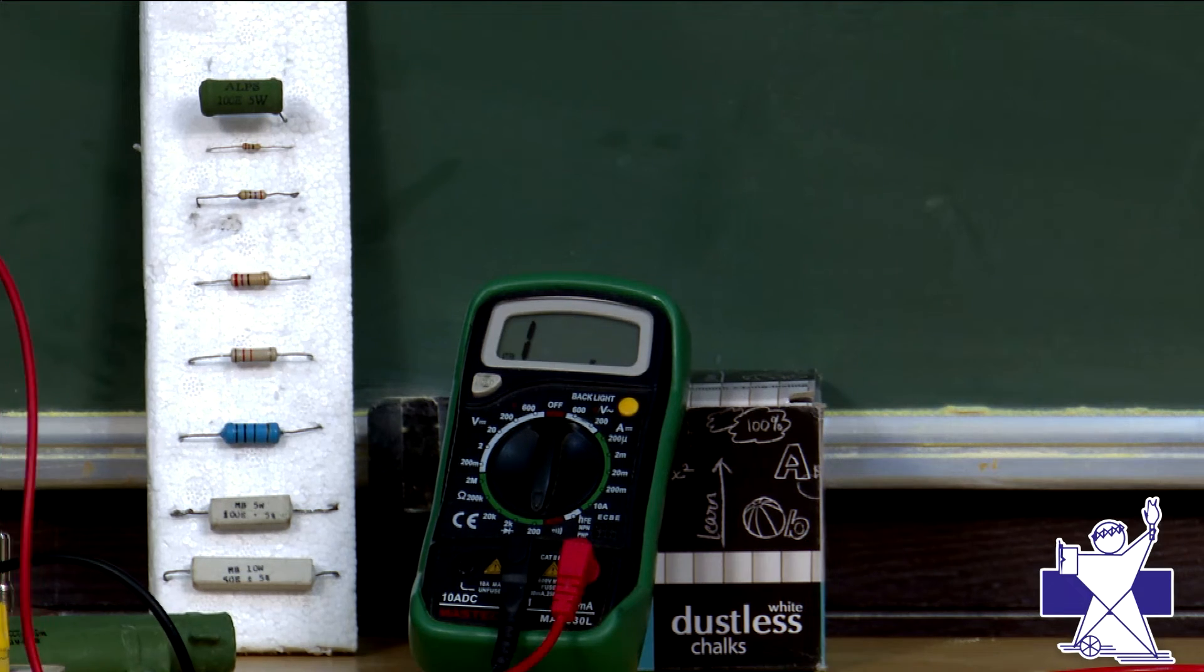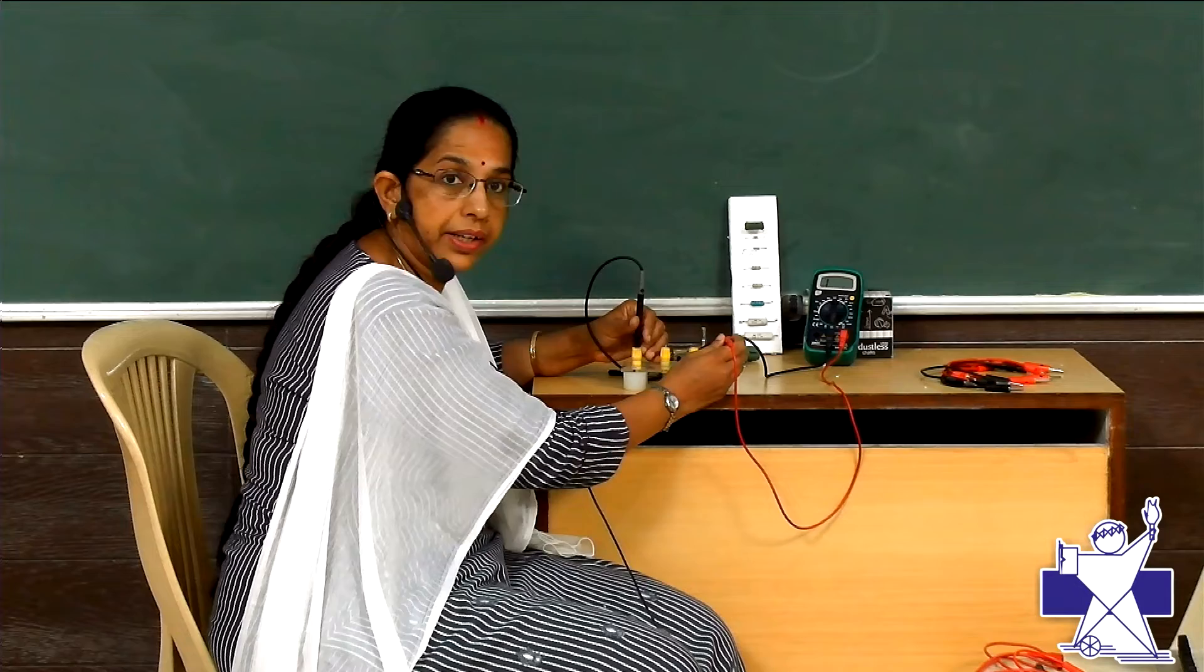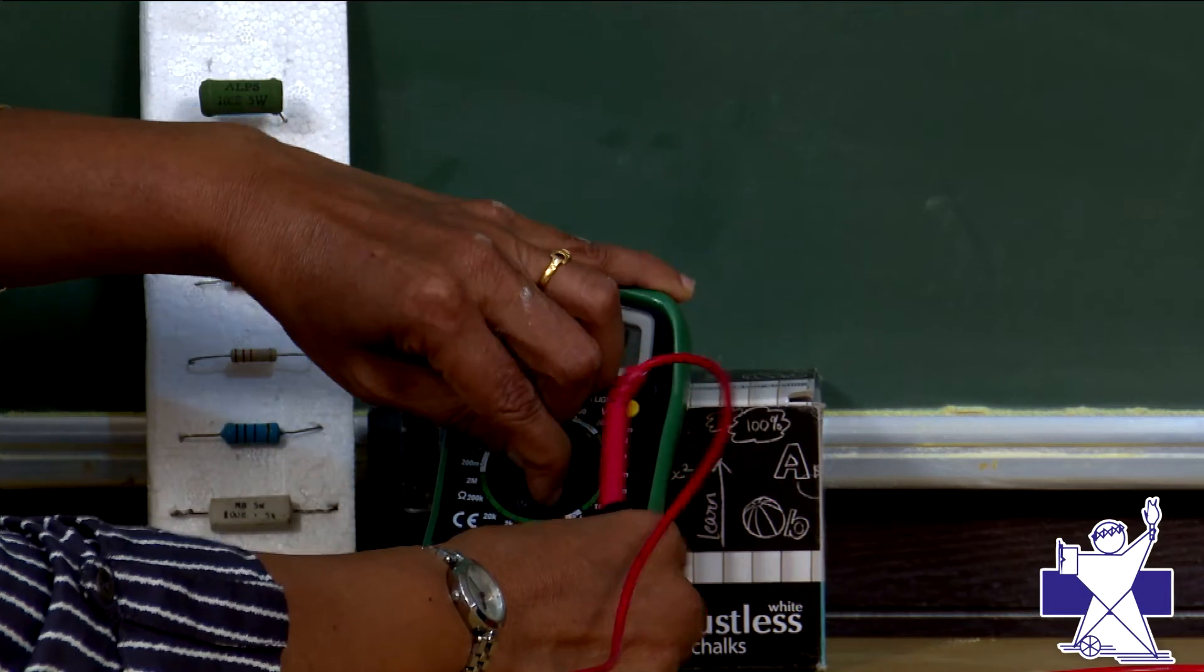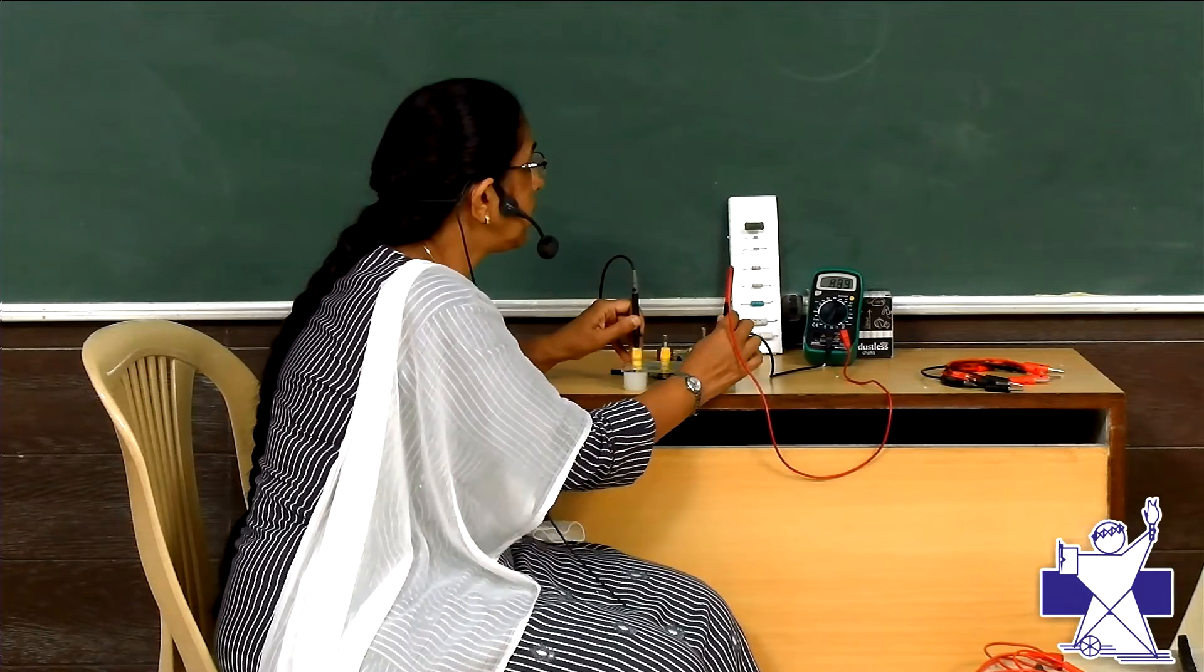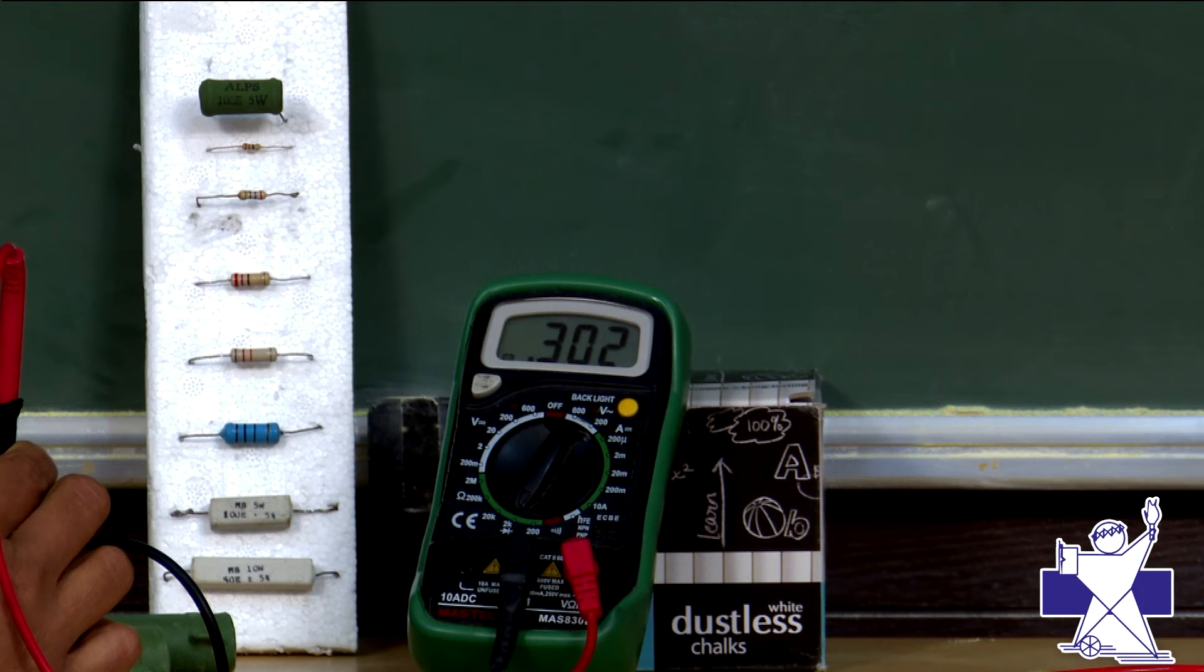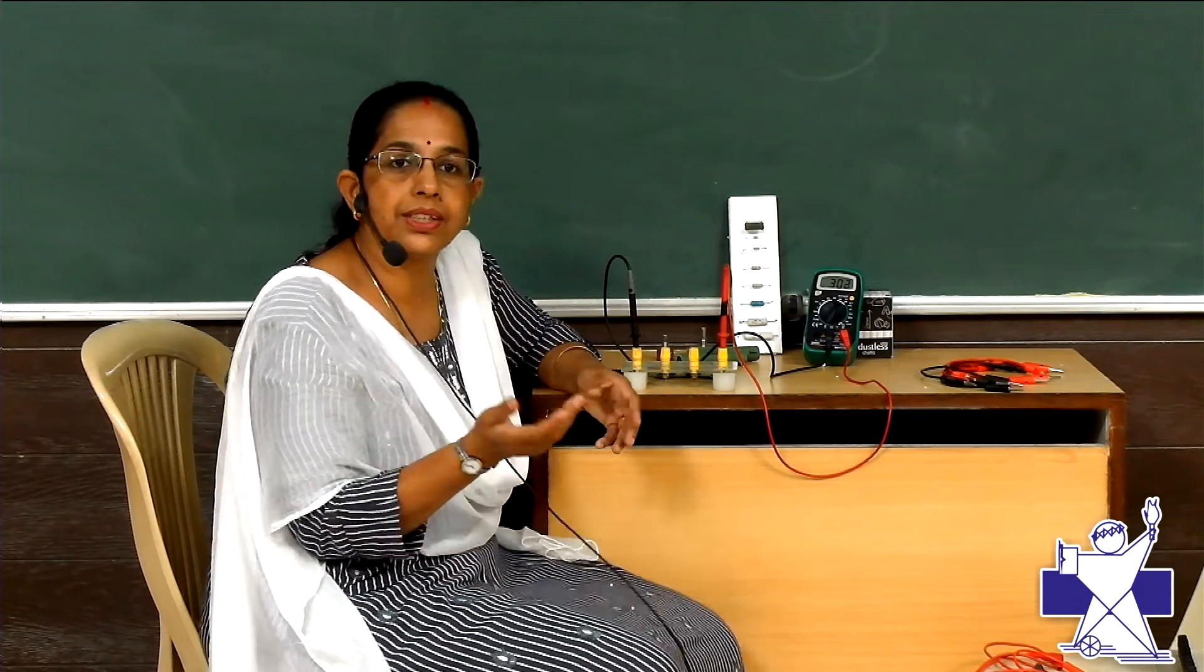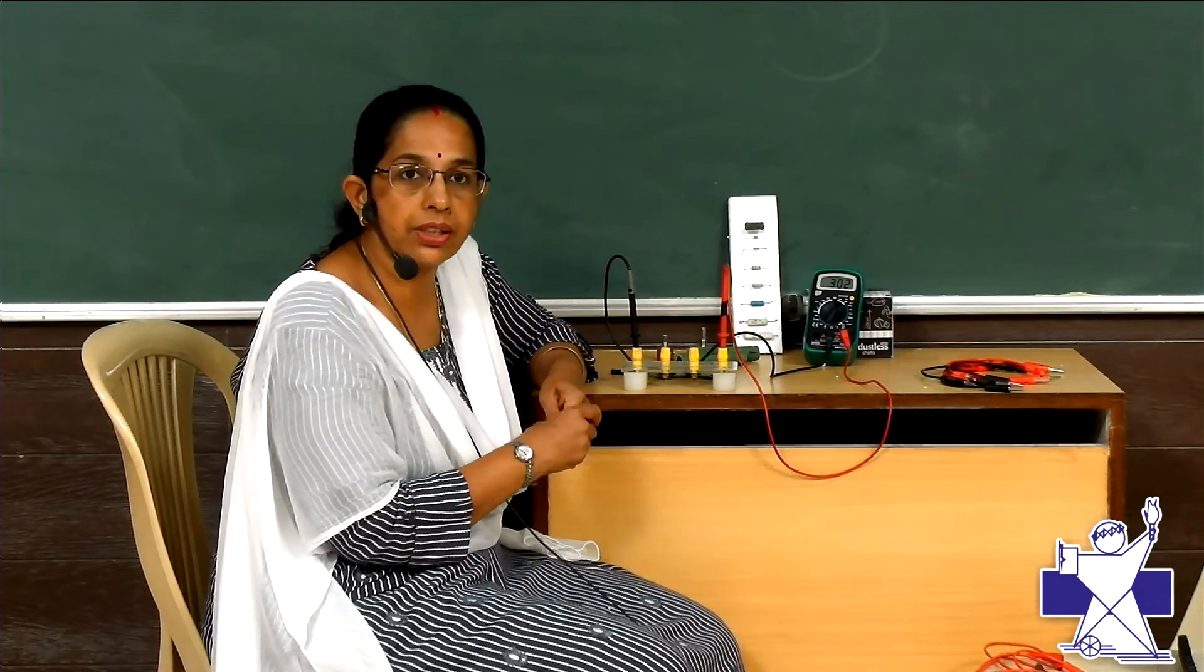Now, one more resistance I am including. It will become 300 ohms. For that, I have to change the range from 200 ohms to 2000 ohms. And now, see here, it is 0.300K. 0.3K means 300 ohms. So, in this way, you can connect resistance, n number of resistance in series, and you can measure the resistance.